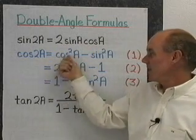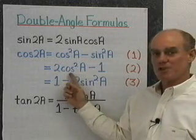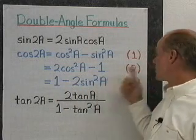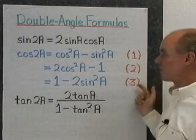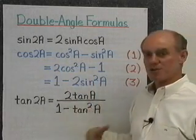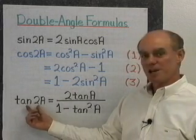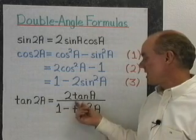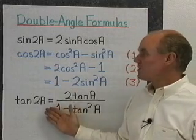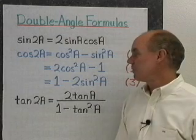When it comes to cosine, we have three formulas. The first is cos²a - sin²a. The second is 2cos²a - 1. And the third is 1 - 2sin²a. I've numbered these as the three different formulas for writing cos(2a). The third formula I have is for tangent. So these are the formulas for sine, cosine, and tangent of twice an angle — that's why we call them double-angle formulas.